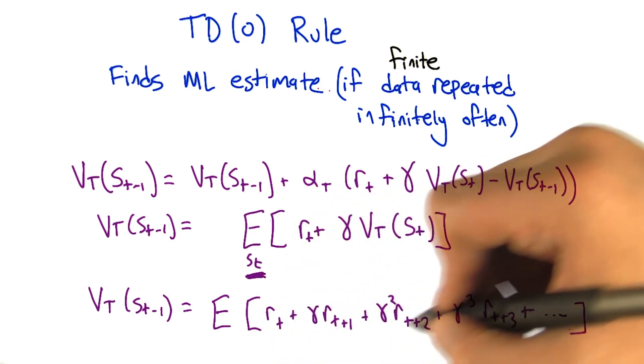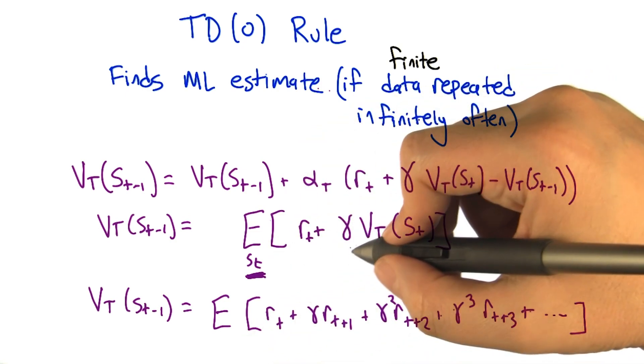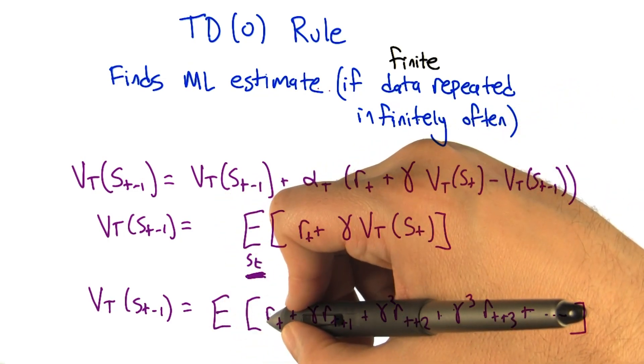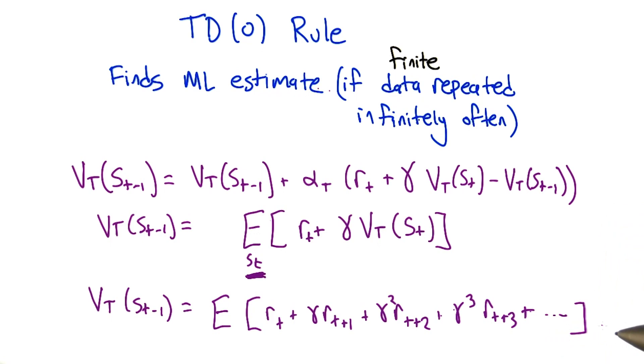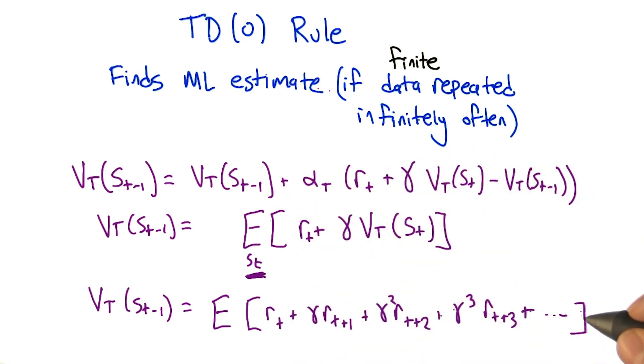We can contrast this with the outcome-based idea where we're not doing this sort of bootstrapping. We're not using the estimate that we've gotten at some other state. We actually use literally the reward sequence that we saw. And so as a result of that, if we've only seen a reward sequence once, like in the case of S2, repeating that update over and over again doesn't change anything. Right. Sure, because the expectation is the expectation.